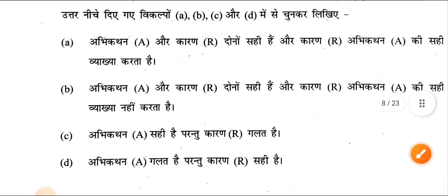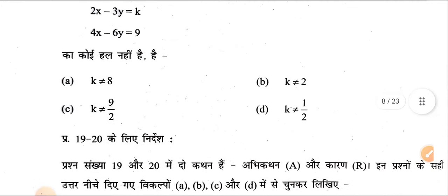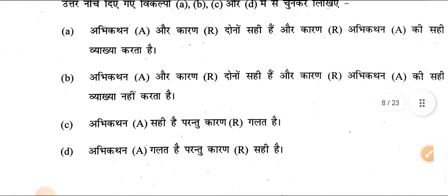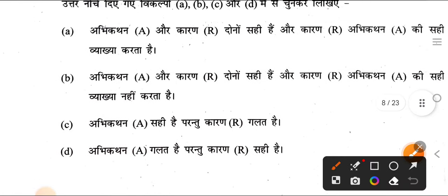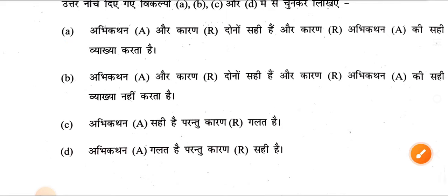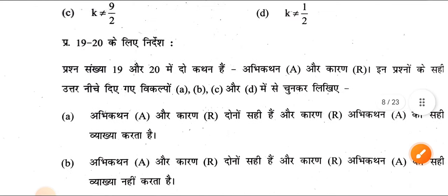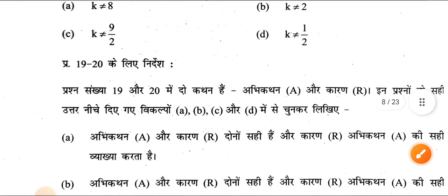For question numbers 19 and 20 — question 19's answer is option B: both A and R are correct but R does not correctly explain A. Question 20's answer is option A: both statements are correct and the explanation is also correct. These are all your objective question answers.